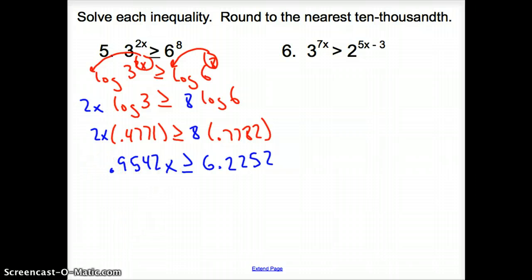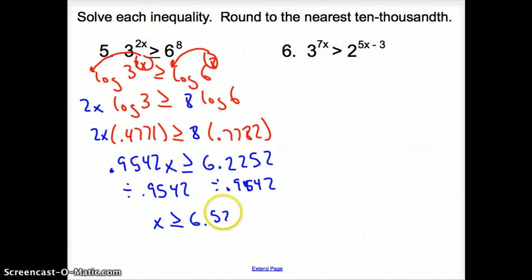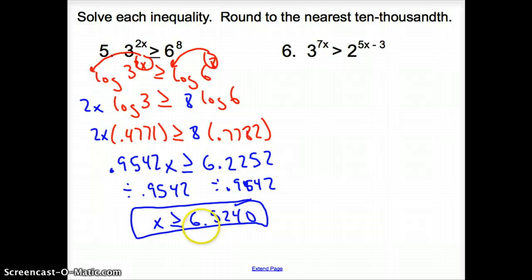How do we get this away from the x? We have to divide both sides by that. So now x is greater than or equal to 6.5240 for our final answer. Could we check this? Yes. You pick a number bigger than 6.5, pick 7, plug 7 in for your x and I bet it works.